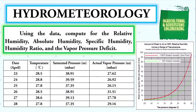I will solve this problem to show you the application for each of these. Using the data, compute for the relative humidity, absolute humidity, specific humidity, humidity ratio, and the vapor pressure deficit. On the table we can see the date to be the month of April from day 23 to day 28. We have the temperature in degrees Celsius, the saturated pressure with symbol es in millibars, and the actual vapor pressure symbolized by ea in millibars.